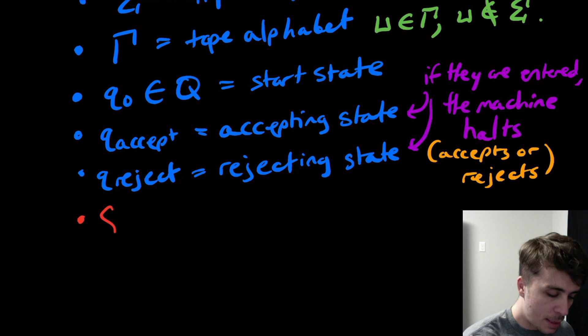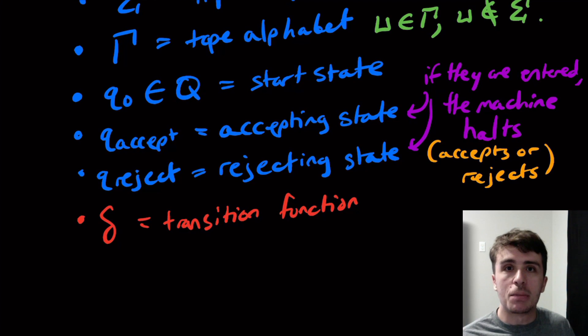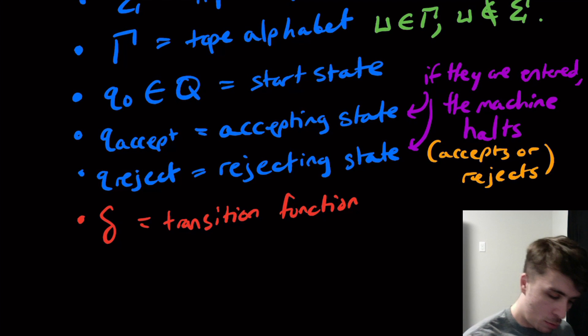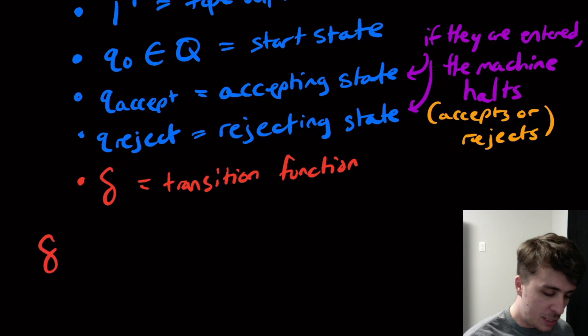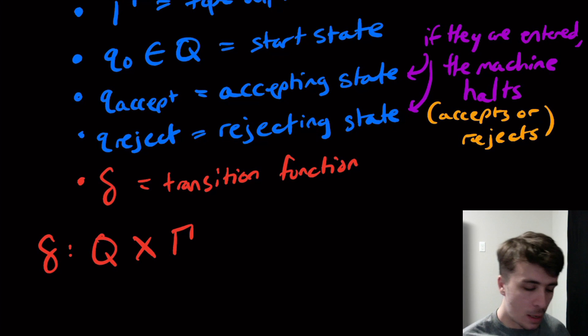The final piece is delta, the transition function. It's a state-based machine, just like before. We have to take a state, and we need to be able to look at the cell that the tape head is looking at, then decide what we need to do. Delta is a function from Q times Gamma, because we take a state and a tape symbol. It's okay because we don't have to put the input alphabet here; all input characters are in the tape alphabet anyway.